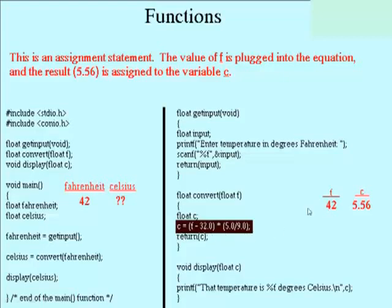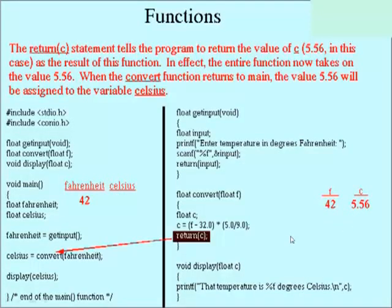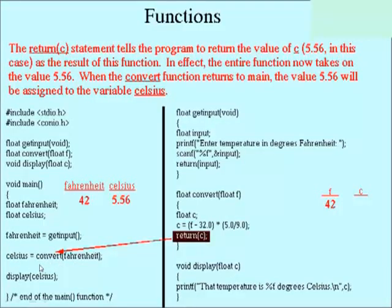So what it comes down to is this equates to a value of 5.56. And then you already know what return c does. It's going to take, it's going to return back to the main function. And it says that the result of this function, its value is now whatever is in c. That's 5.56. So it's going to take 5.56 and assign it to the variable called Celsius.